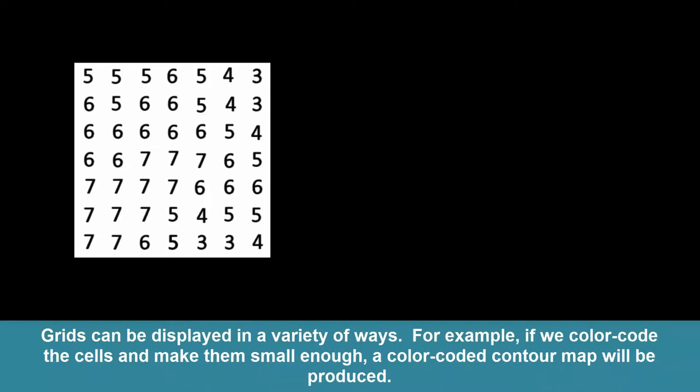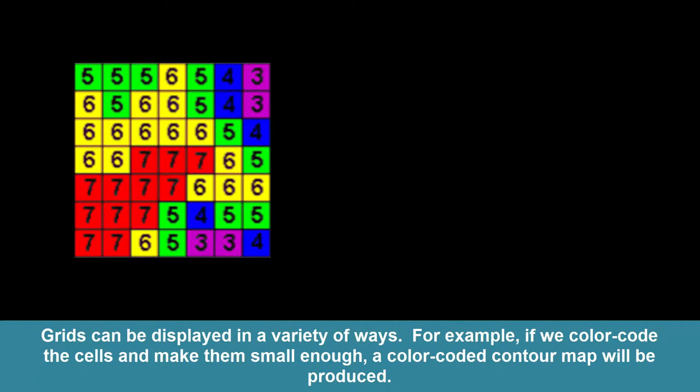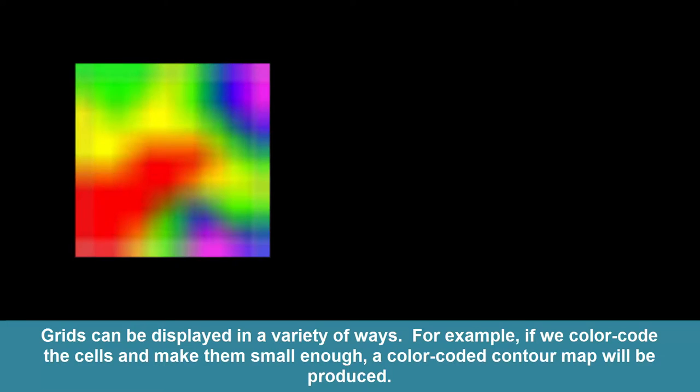Grids can be displayed in a variety of ways. For example, if we color-code the cells and make them small enough, a color-coded contour map will be produced. We can draw lines around similar cells to produce contour maps.